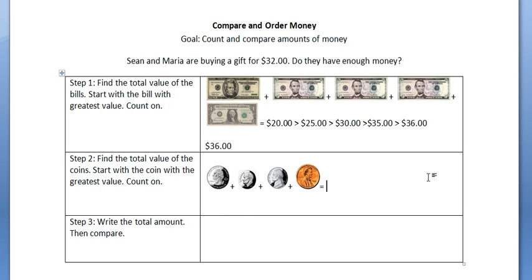The value of a quarter is $0.25. The value of a dime is $0.10. $0.25 plus $0.10 is $0.35. The value of a nickel is $0.05. Five plus $0.35 is $0.40. And the value of a penny is $0.01. $0.40 plus $0.01 gives us $0.41. The total value Sean and Maria have in coins is $0.41.